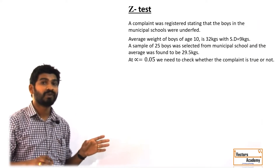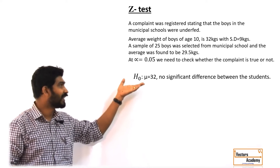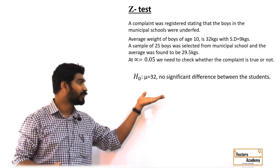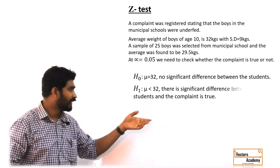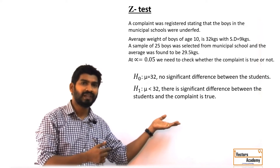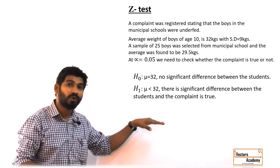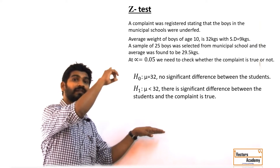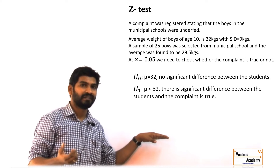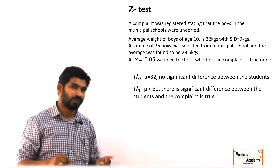Before starting we need to define our null hypothesis and the alternate hypothesis. The null hypothesis is that there is no significant difference between the boys of the municipal school and the population. If we accept the alternate hypothesis, then the complaint filed is said to be true — that the students are underfed and not given proper food. But if we accept the null hypothesis, the complaint is found to be false.